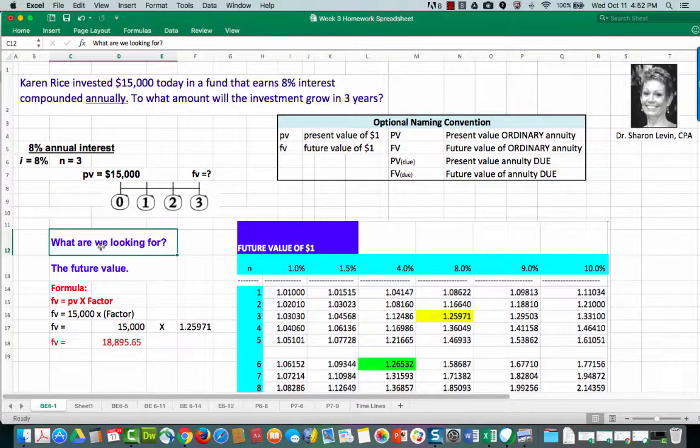So what exactly is it that we're looking for? We're looking for the future value of this $15,000 investment. We're going to use a formula. The formula says we're looking for the future value which is equal to the present value times a factor. The future value is what we don't know so we'll keep that on the left hand side of the equation. It's equal to the present value which is $15,000 times the factor.